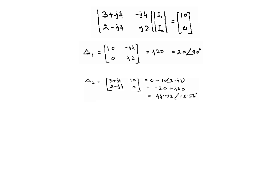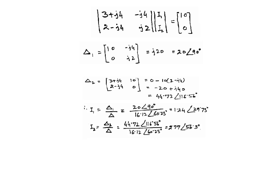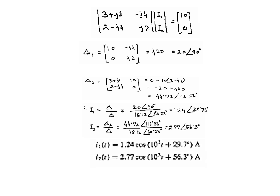For delta1 we replace the first column and solve. For delta2 we replace the second column with 10 and 0 and find the answer. Current I1 equals delta1 over delta, and I2 equals delta2 over delta. Substituting values gives I1 and I2 in phasor form. We then convert to the time domain: I1 = 1.24 cos(10^3 * t + angle), and similarly for I2.